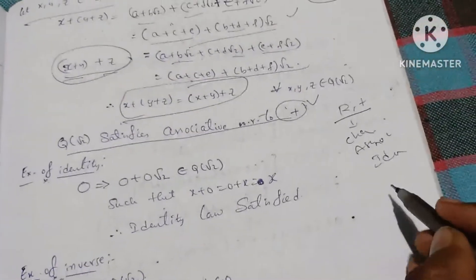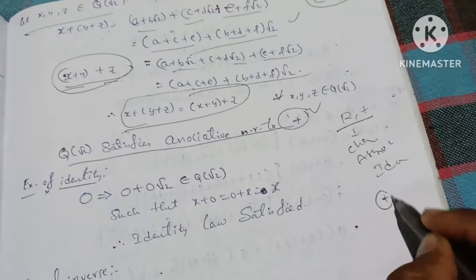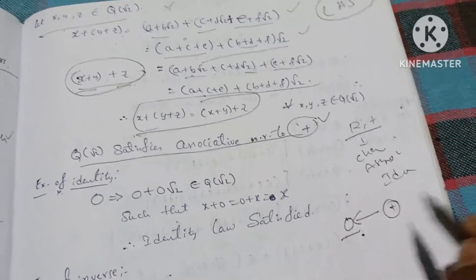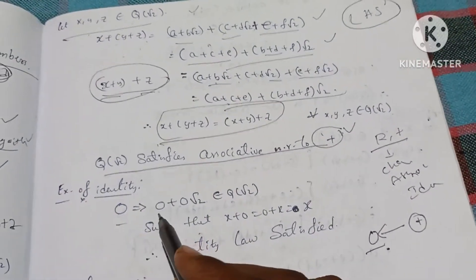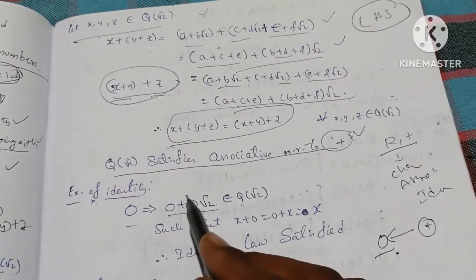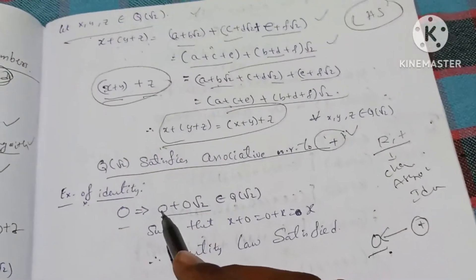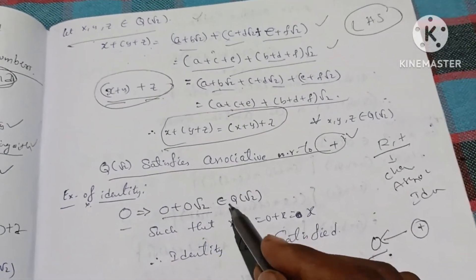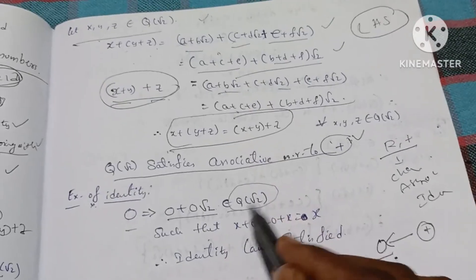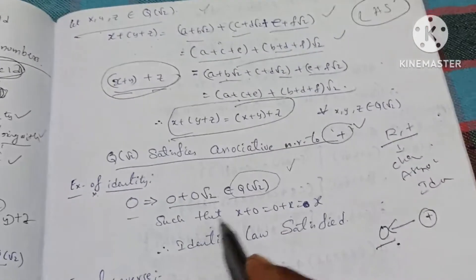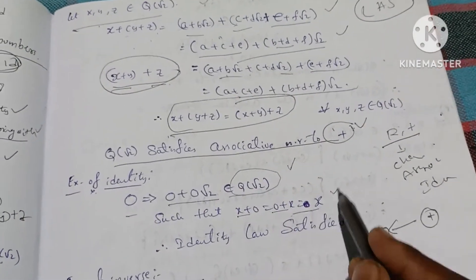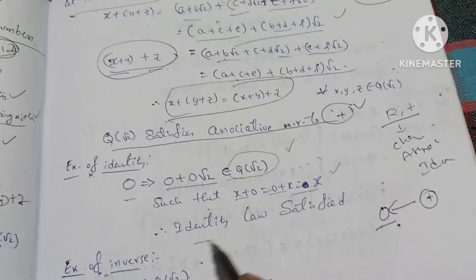Addition identity: 0 equals 0 plus 0 root 2, which is of the form a plus b root 2 and belongs to Q(√2), such that x plus 0 equals 0 plus x equals x. The identity law is satisfied.